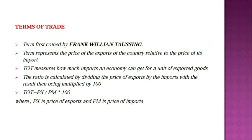The ratio is calculated by dividing the price of exports by the price of imports, with the result multiplied by 100. That is: TOT = (Price of Exports / Price of Imports) × 100, where PX is the price of exports and PM is the price of imports.